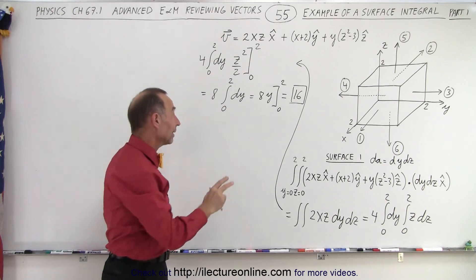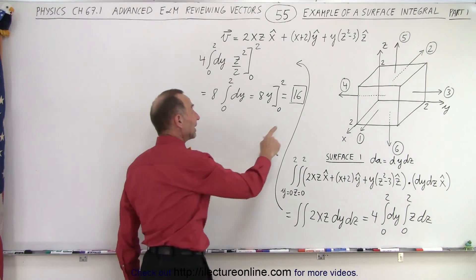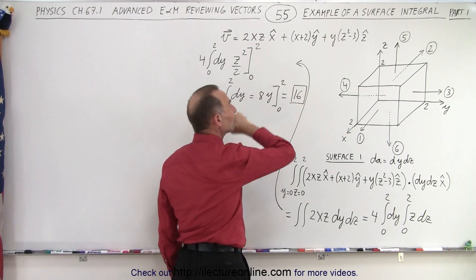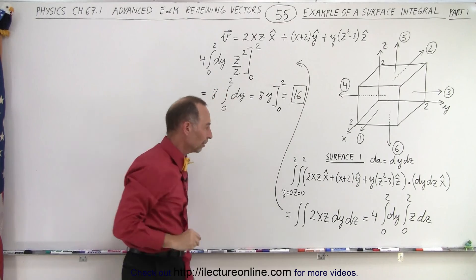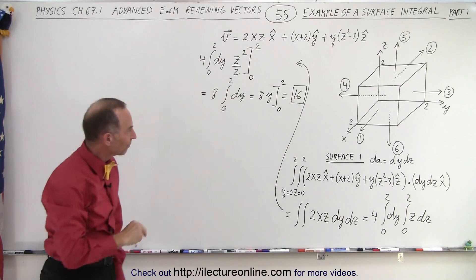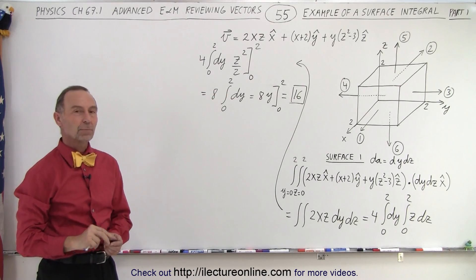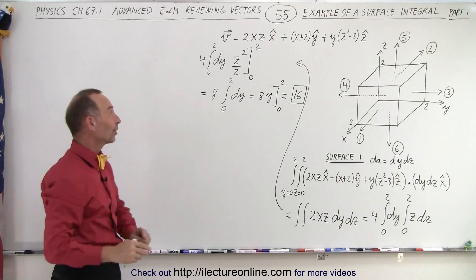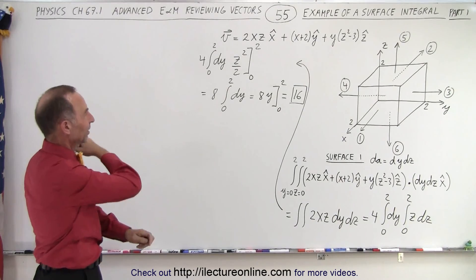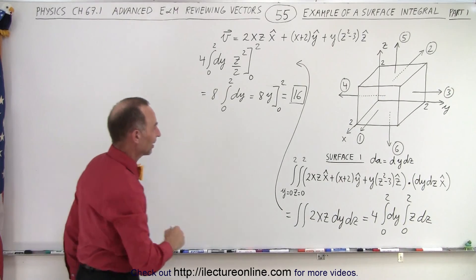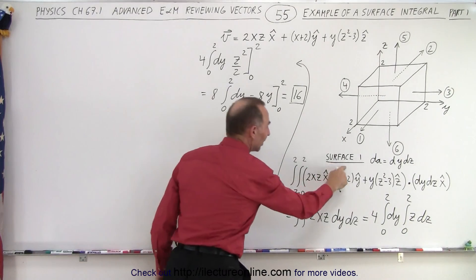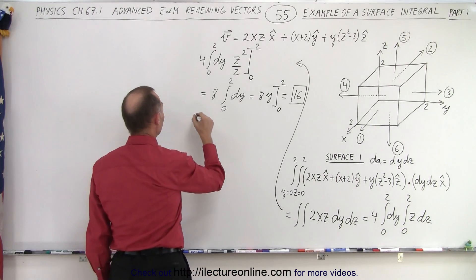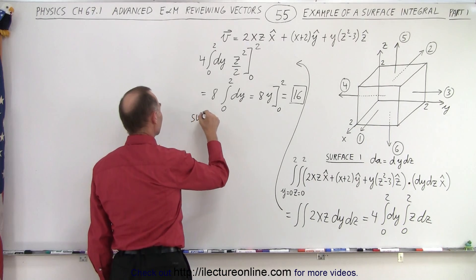Remember that we always get a scalar result when we do a surface integral, and that is how it's done. But we're not done yet — we only did the first surface. We need to continue. That's surface number one; we've got five more surfaces to go. So let's do surface number two.